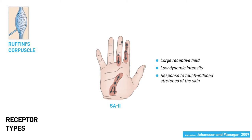Ruffini's corpuscles are called slow-adapting type 2 or SA2. They have a rather large receptive field and respond to touch-induced skin stretches with low frequency.